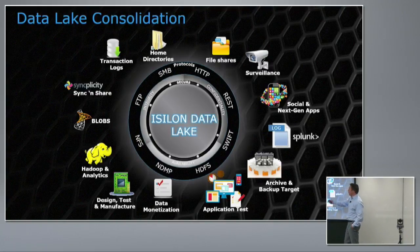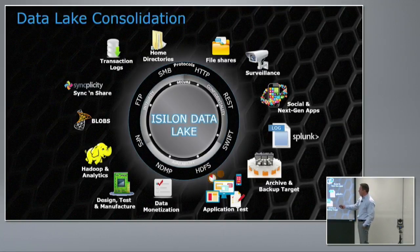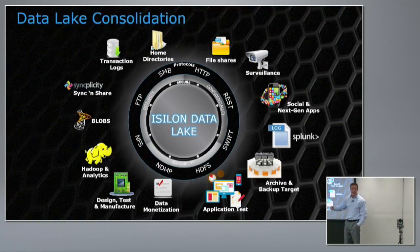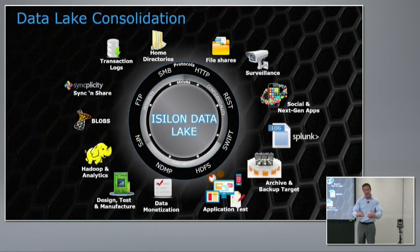Data can come in through a number of different protocols. We support all of the NAS protocols: NFS v3, v4, SMB v2, v3, FTP, HTTP. We have a REST API, we can come in over Swift, which is an object API using GET and PUT, and even over HDFS. We have a native HDFS protocol which allows the Hadoop cluster to connect directly to an Isilon and treat it as local Hadoop storage.